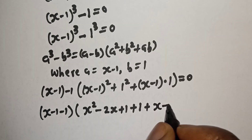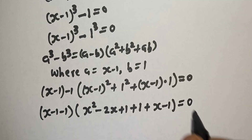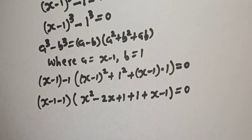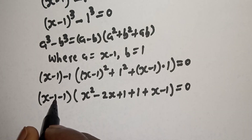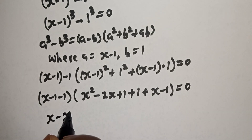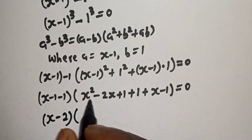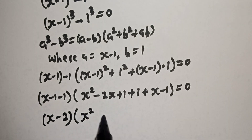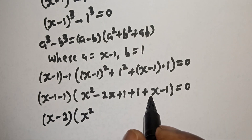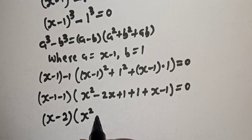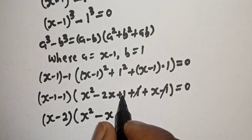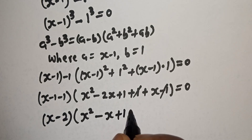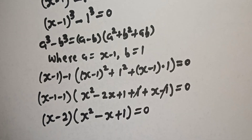S minus 1 multiplied by 1 is S minus 1. This simplifies to S minus 2, bracket S squared minus 2S plus S minus 1 plus 1 plus 1. The minus 1 and plus 1 cancel, and we are left with S minus 2 times S squared minus S plus 1 is equal to 0.